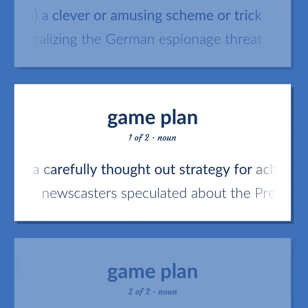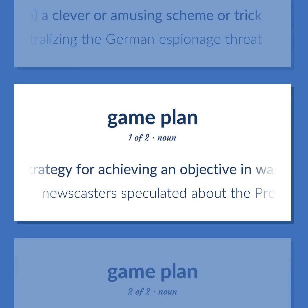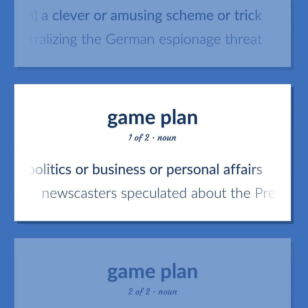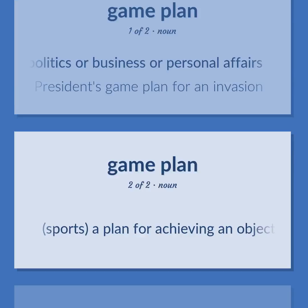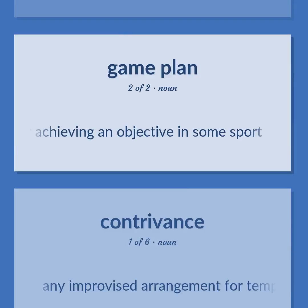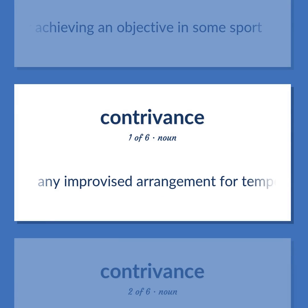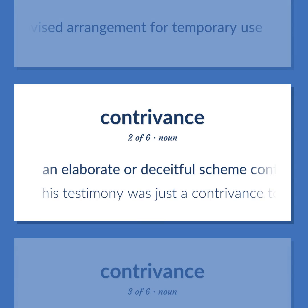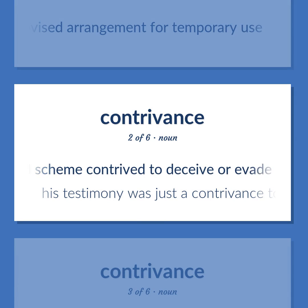Game plan: A carefully thought-out strategy for achieving an objective in war, politics, business, or personal affairs — newscaster speculated about the president's game plan for an invasion. Sports: a plan for achieving an objective in some sport. Any improvised arrangement for temporary use. An elaborate or deceitful scheme contrived to deceive or evade.